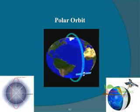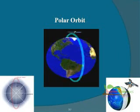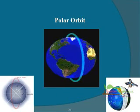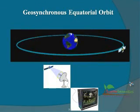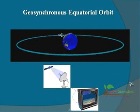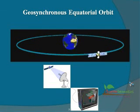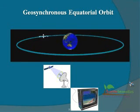A polar orbit is a particular type of low Earth orbit. The only difference is that a satellite in polar orbit travels in the north-south direction, rather than the more common east-west direction. A geosynchronous orbit, also called a geostationary orbit, is located exactly 22,300 miles out in space. Many communications satellites travel in geosynchronous orbits, including those that relay TV signals into our homes.